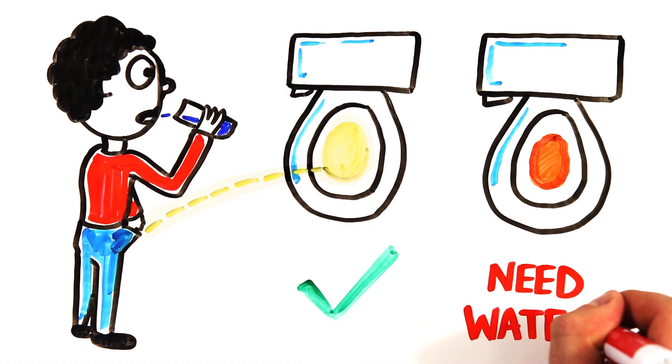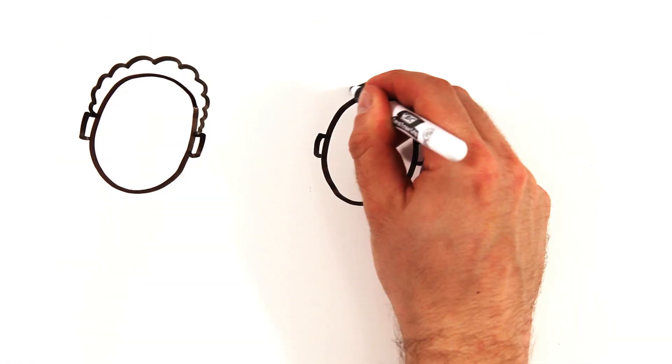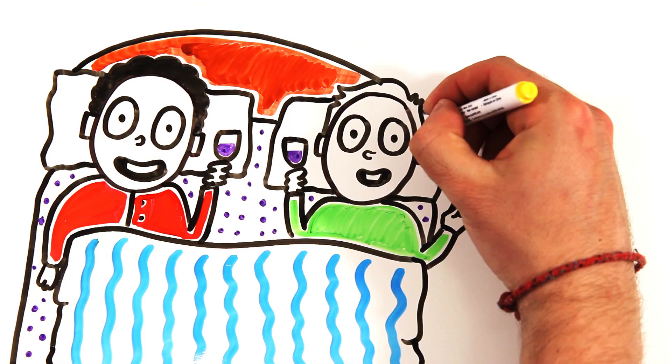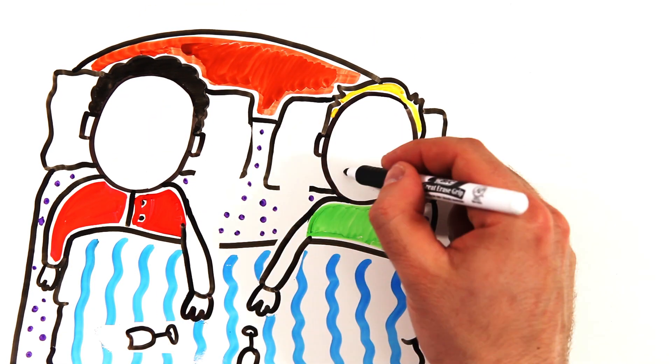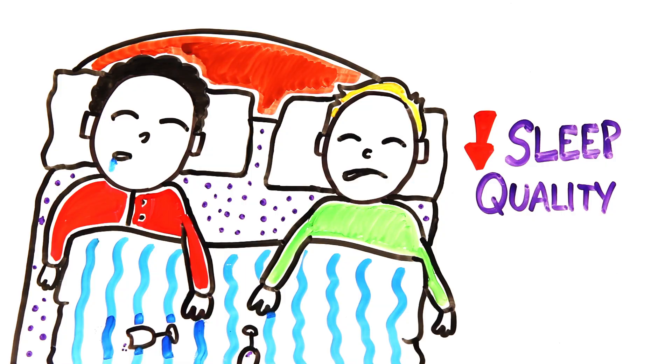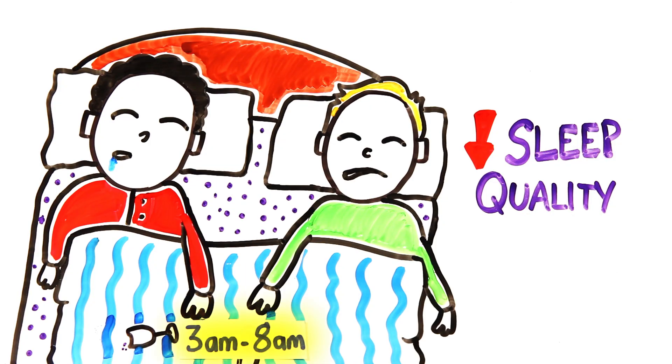Those glasses of wine or beers before bed may also be affecting your day. Studies have found that after becoming intoxicated, while test subjects would fall asleep faster, their quality of sleep was actually much lower, particularly during the second half of their night's sleep. Ultimately, alcohol reduces the amount of REM sleep you get.